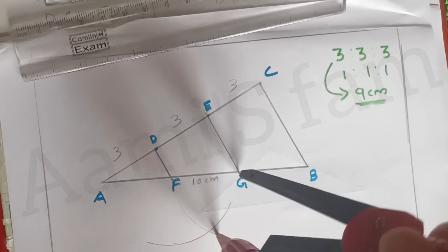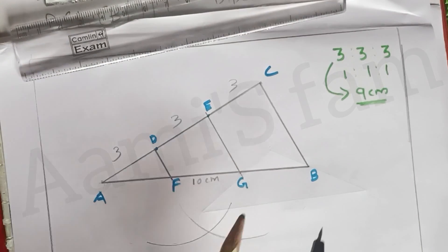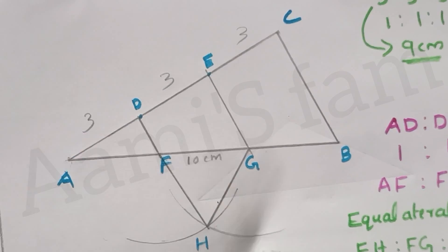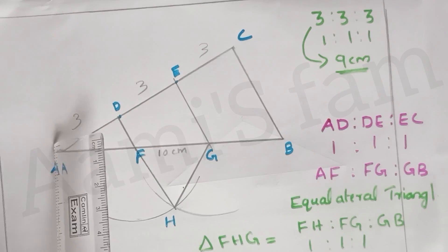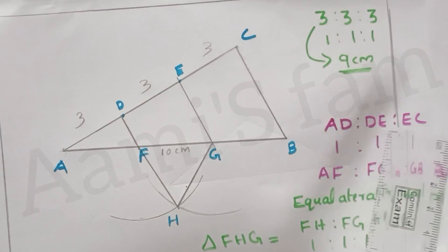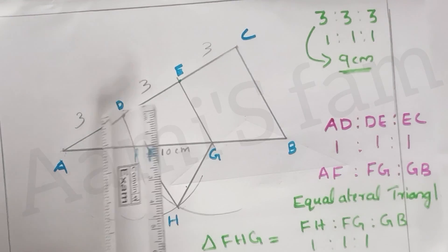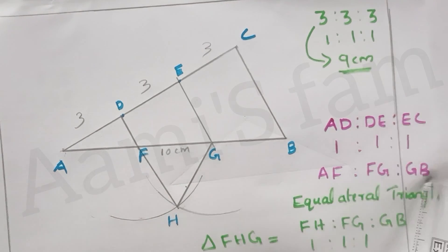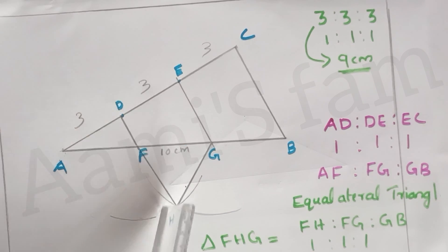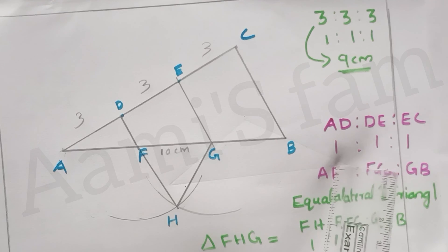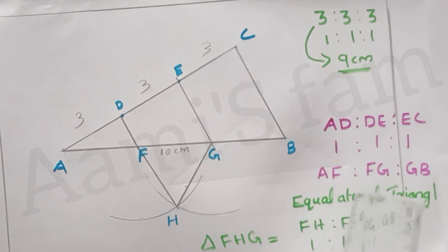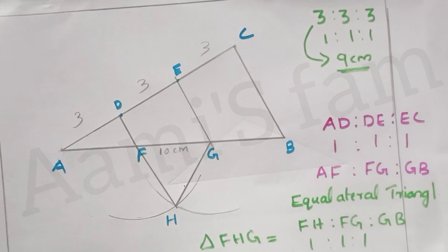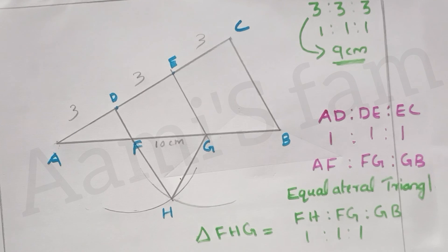We call them G and F. Now we call them F and G. The ratio is A to D to E — 1:1:1 — because everything is 3:3:3, one number is one. That is the main part: AD equals AF, DE equals FG, EC equals GB. This is the triangle. If we say FG, that is the main part of FH.